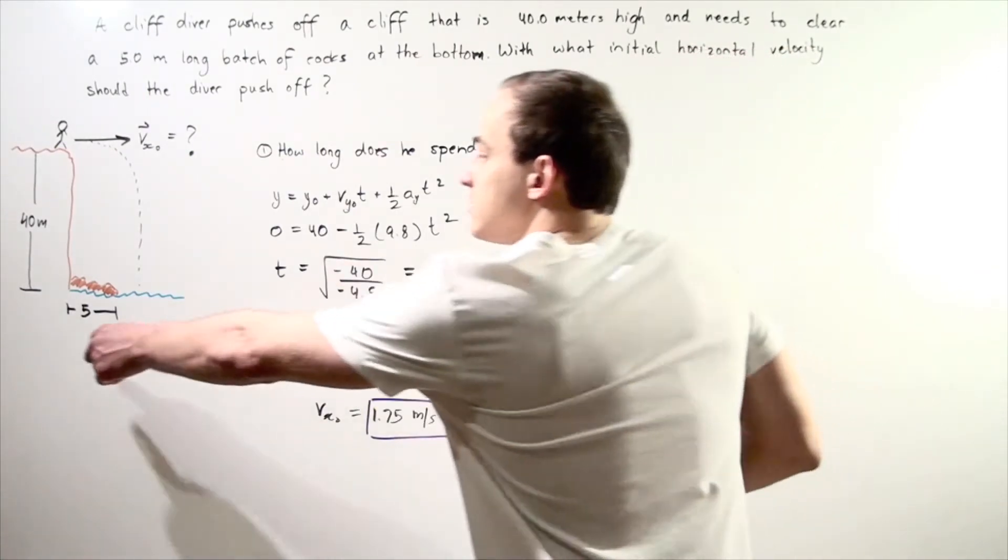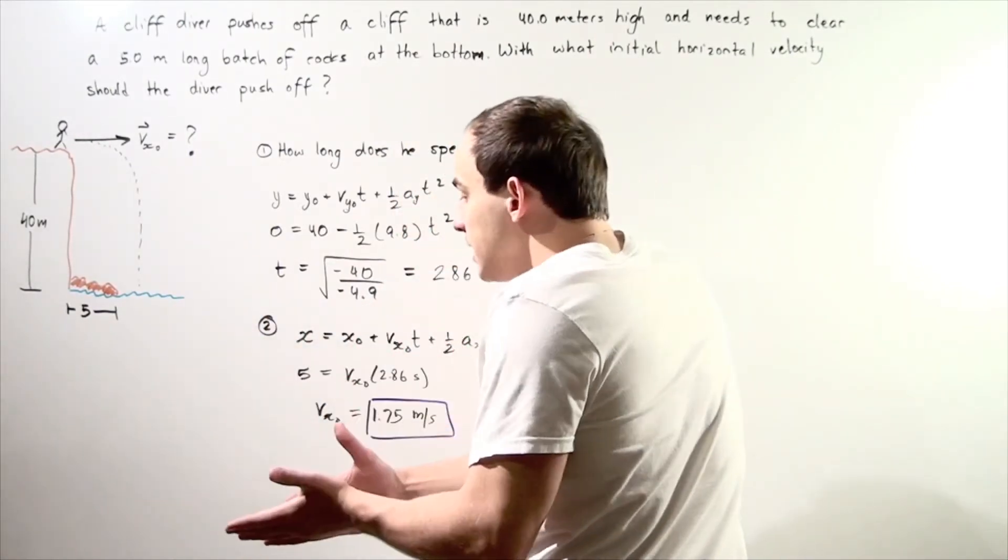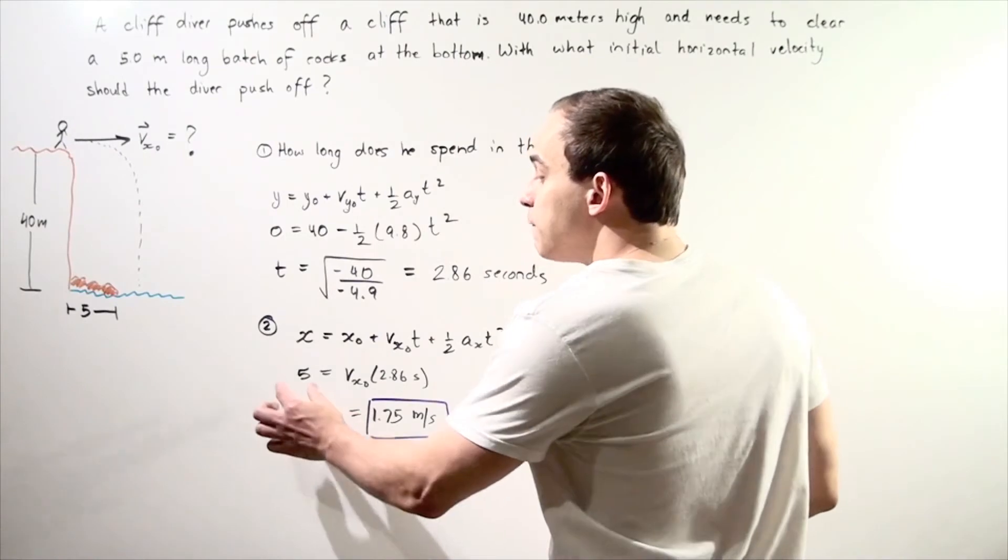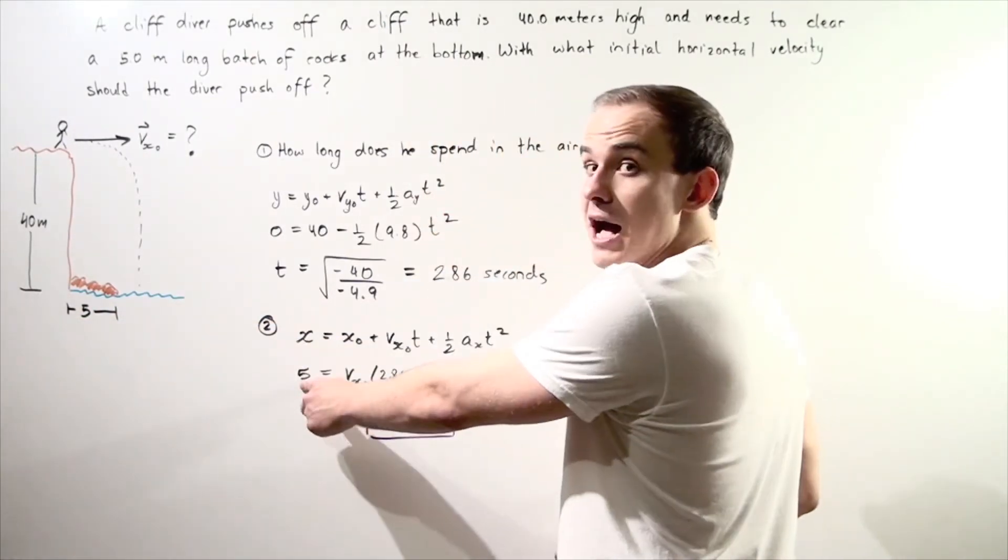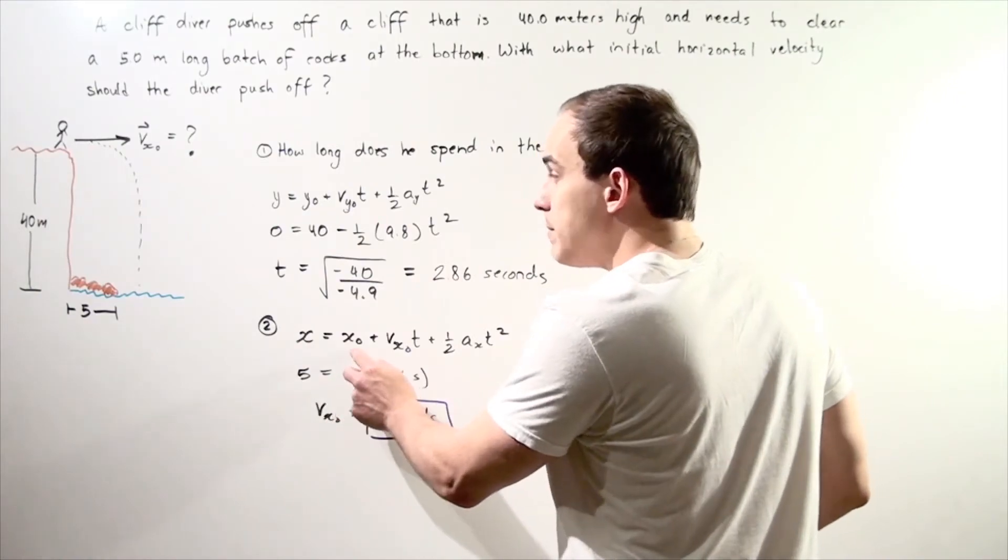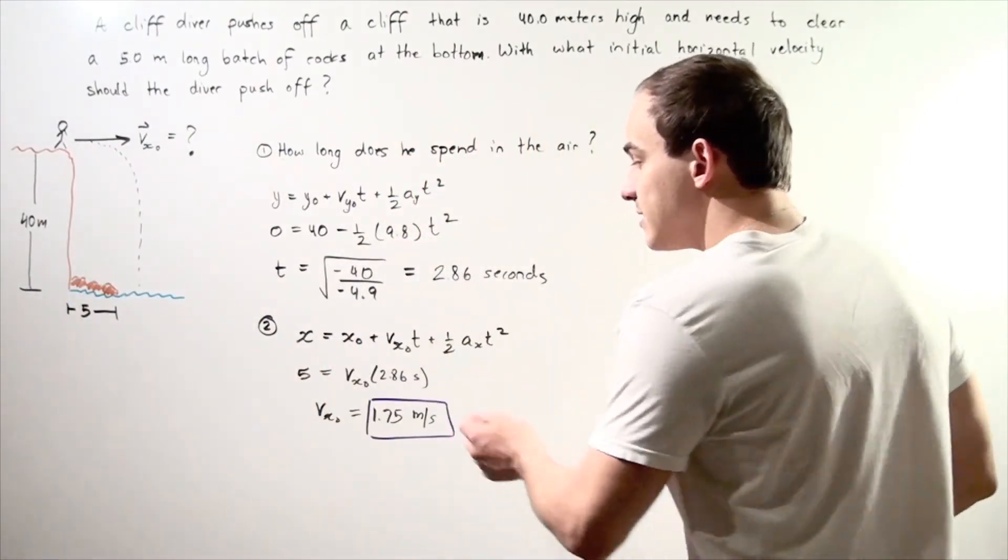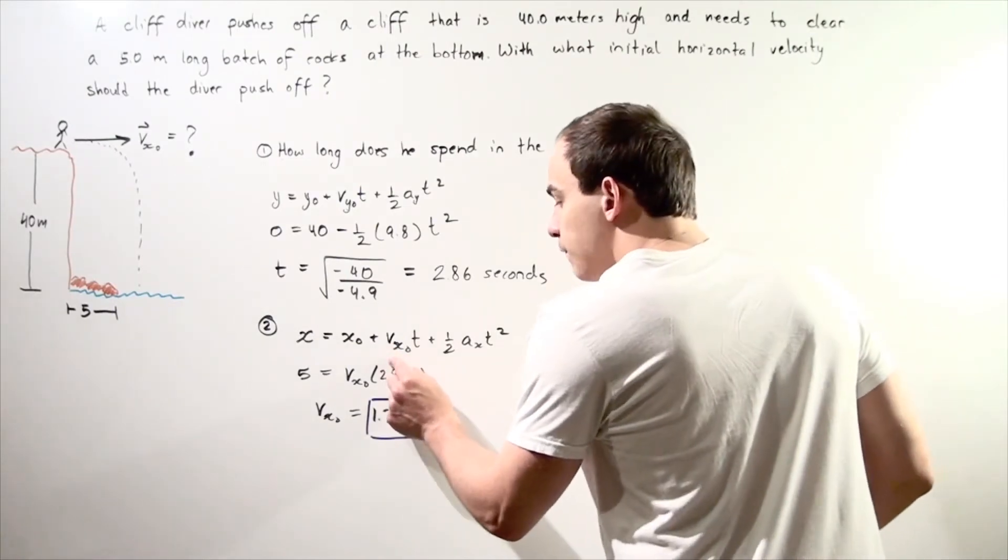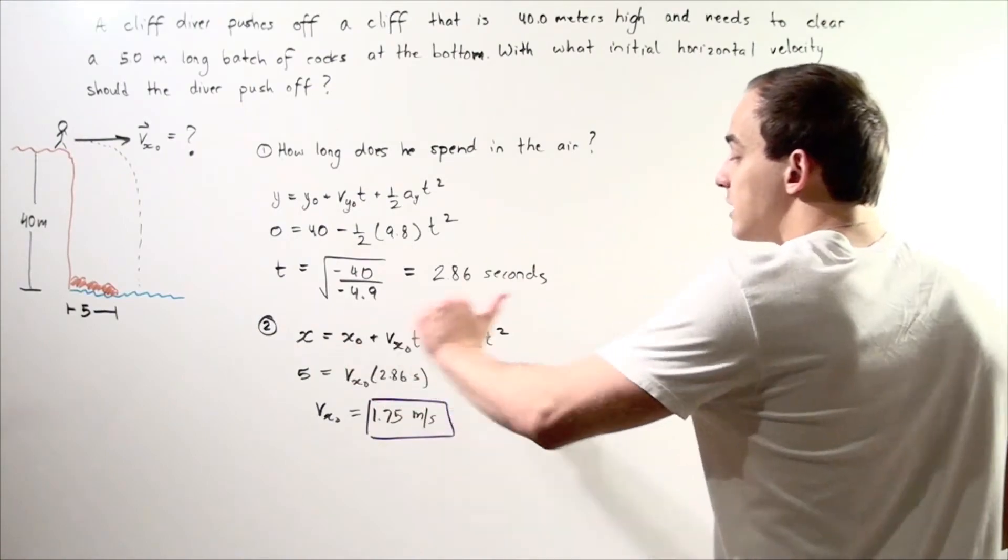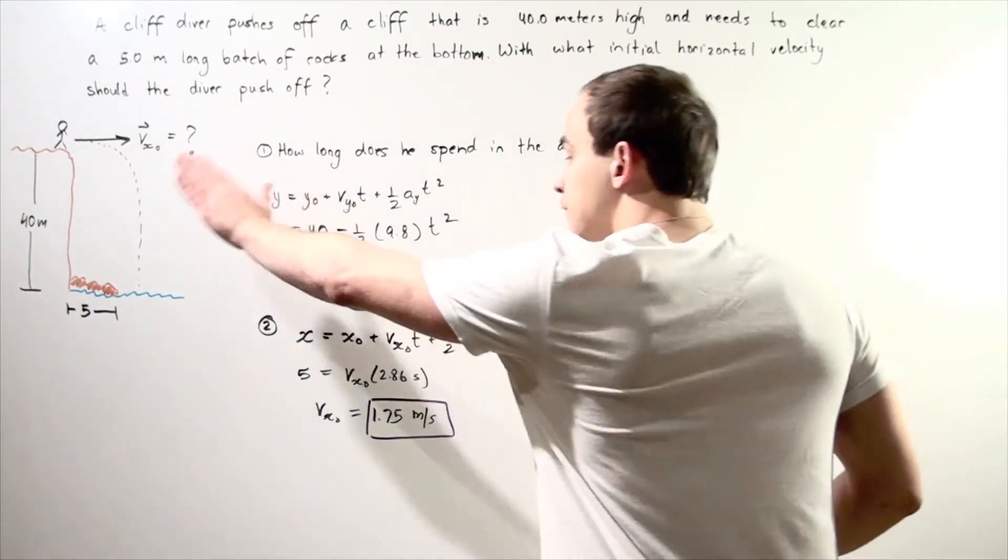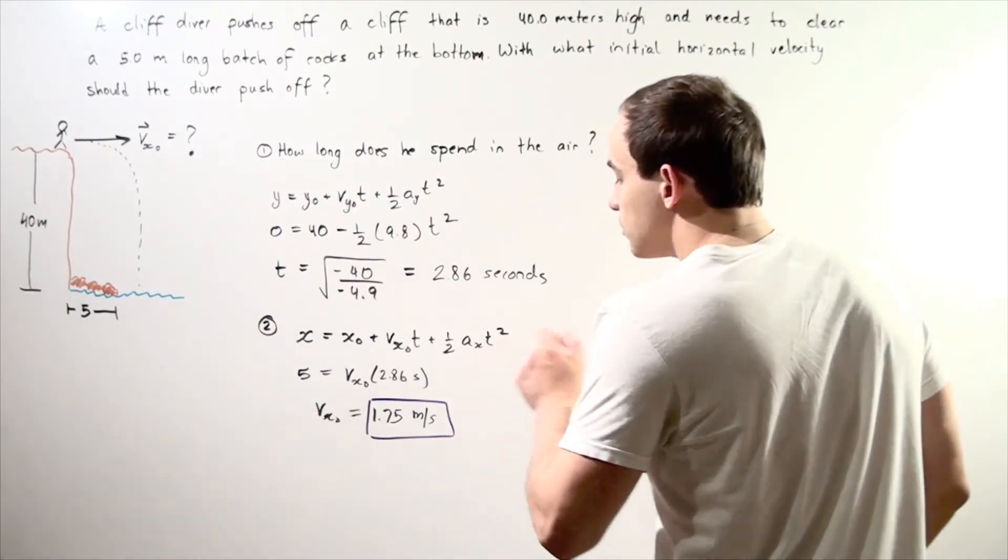Since we have this 5 meter batch of rocks that need to be cleared, that means our final position along the x-axis needs to be 5. Our initial, we make the assumption, is 0. Now, our initial velocity is exactly what we're looking for. And, our acceleration along the x-axis during freefall is always 0, because we're neglecting air resistance.